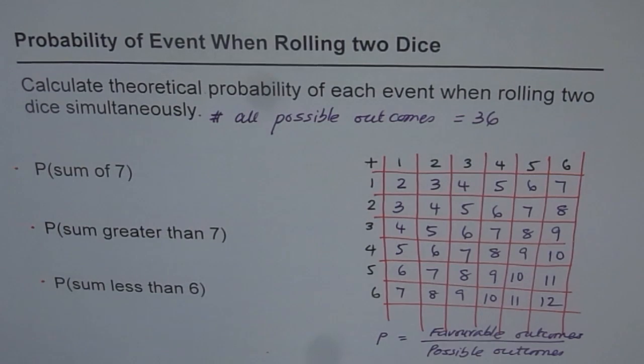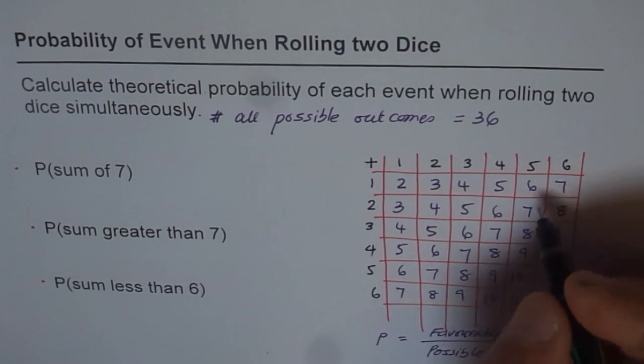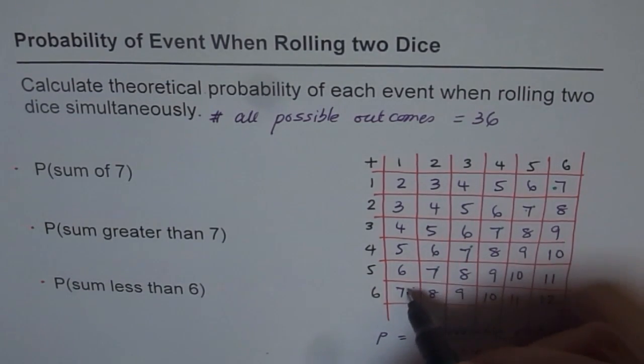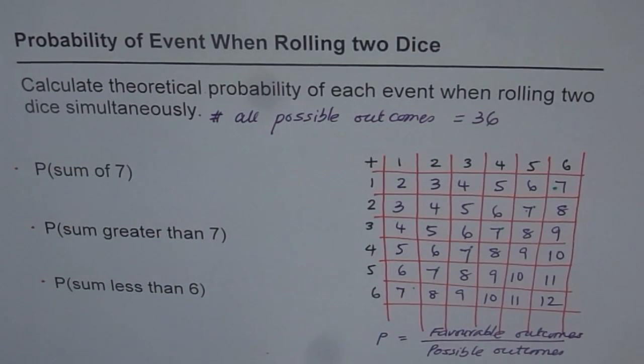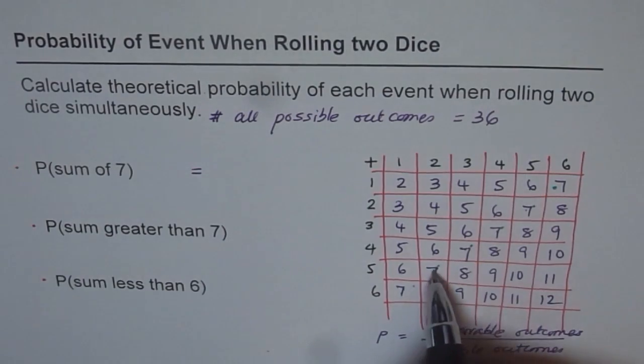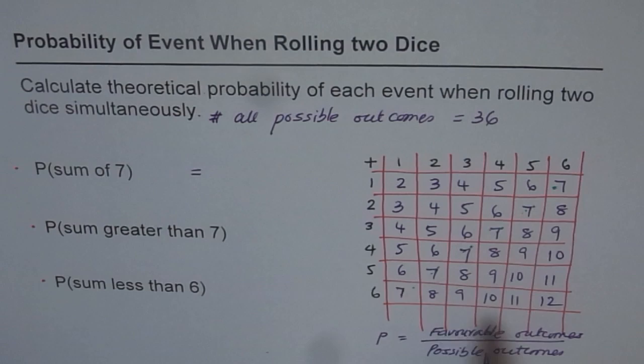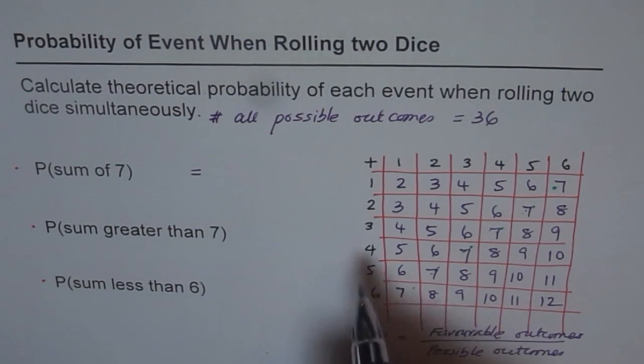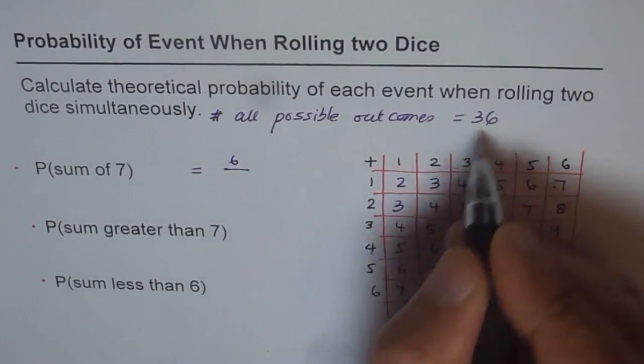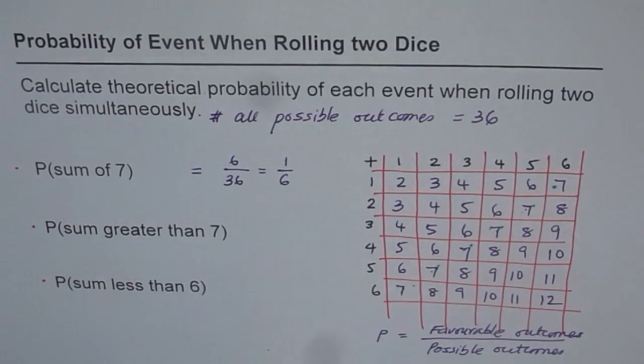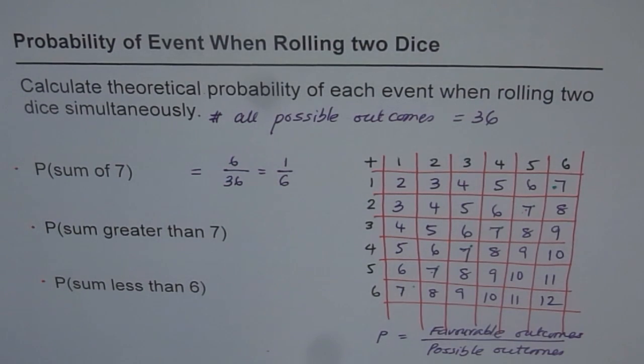Sum of seven. We already have a table, and you can see where we get seven. These are our sevens. How many are these? One, two, three, four, five, six. So that is how many times you get seven. The probability equals six over thirty-six, which can be written as one out of six. So that is the probability of getting sum of seven.